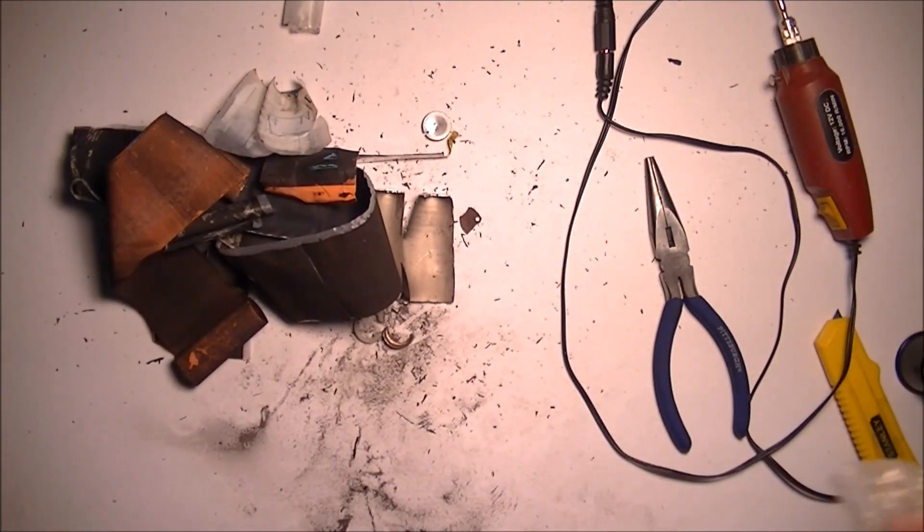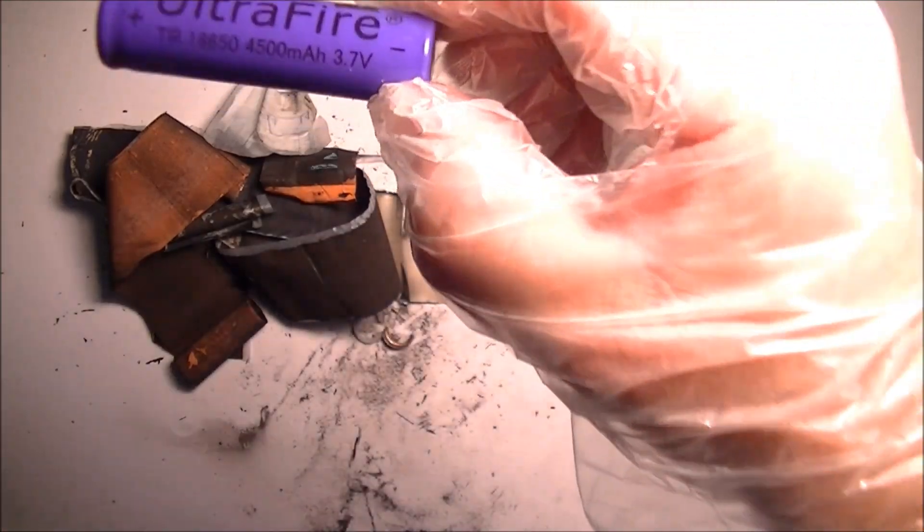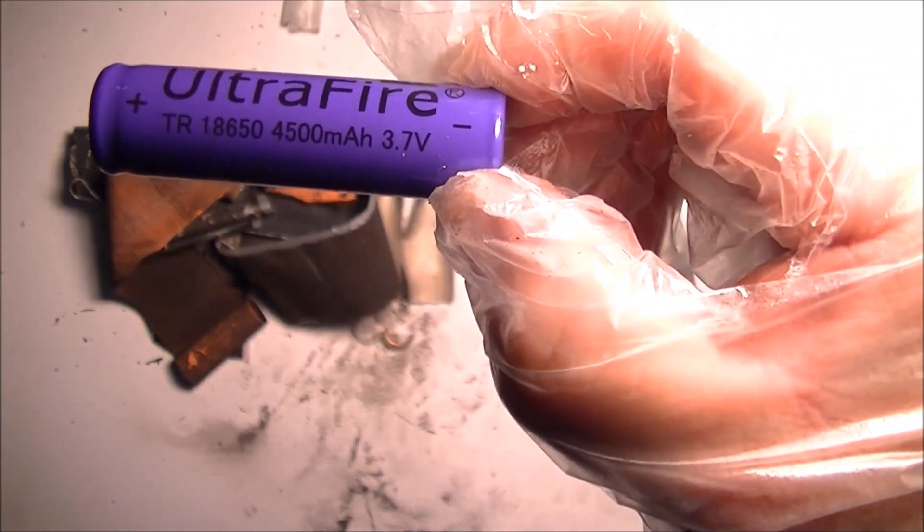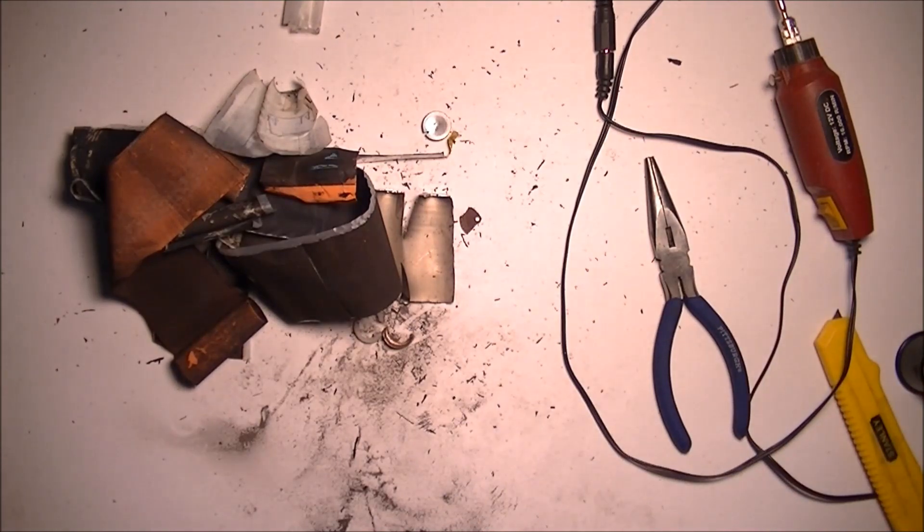So that's my Ultrafire TRS 18650 4500 milliamp hour 3.7 volt battery disassembly. Thanks for watching, now I gotta clean up this mess.